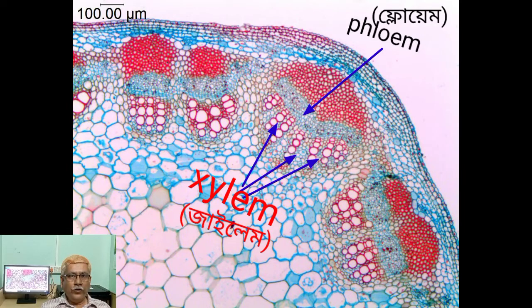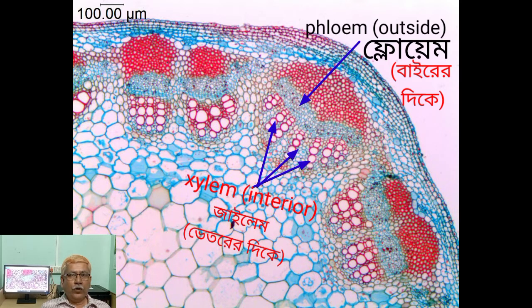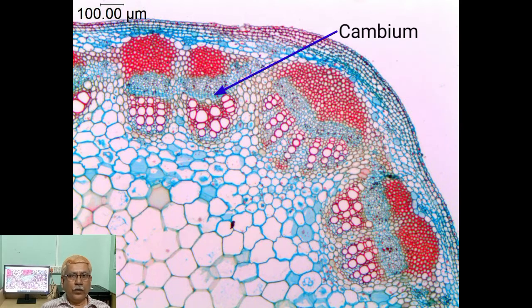What is a conjoint vascular bundle? When xylem and phloem of a vascular bundle lie on the same radius, it is called a conjoint type of vascular bundle. What is a collateral vascular bundle? In the case of a collateral type of conjoint vascular bundle, xylem is arranged towards the interior while phloem is present outside the xylem on the same radius.